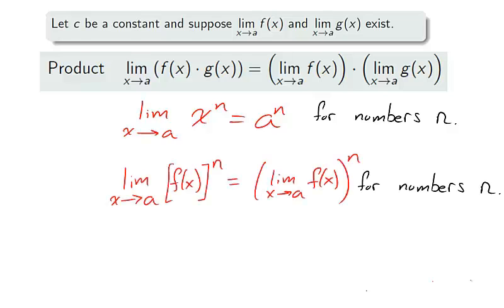This fact continues to be true for general functions. If the limit of a function exists, a function can be multiplied to itself n times or have a limit taken in any order.